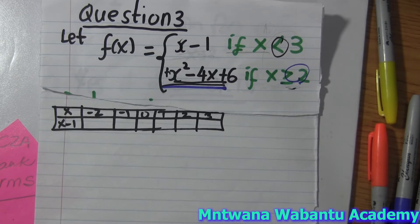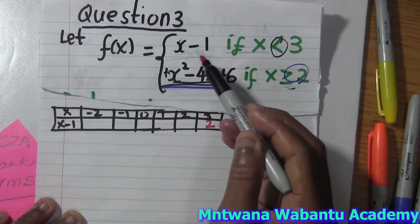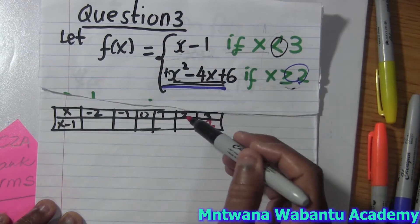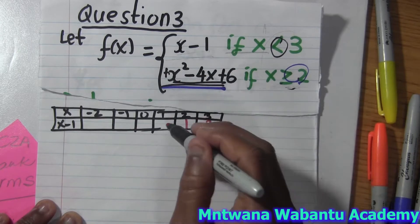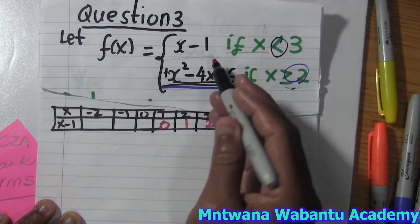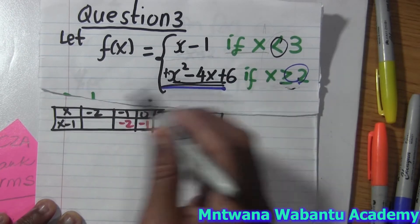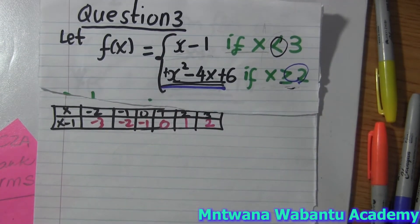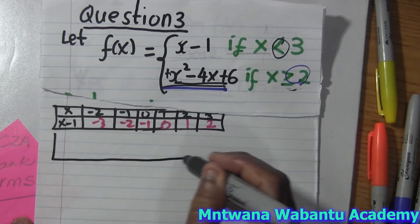Substituting into f(x) = x minus 1: when x = 3, y = 2; when x = 2, y = 1; when x = 1, y = 0; when x = 0, y = negative 1; when x = negative 1, y = negative 2; when x = negative 2, y = negative 3. So we have the table of values for the first piece.